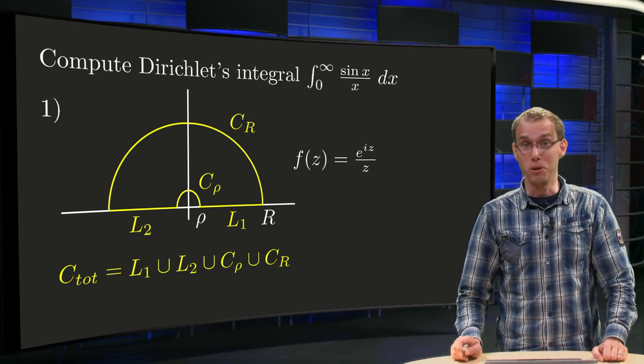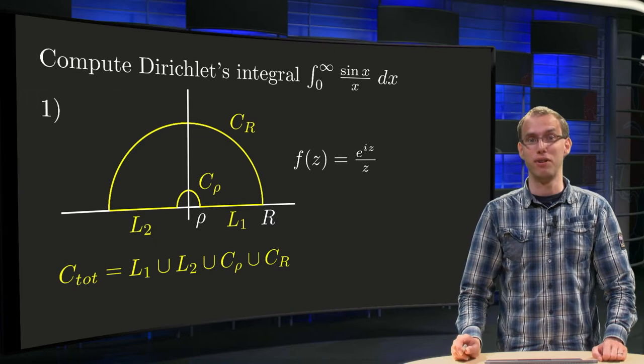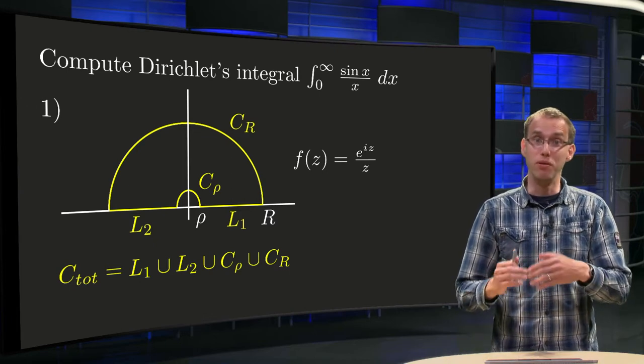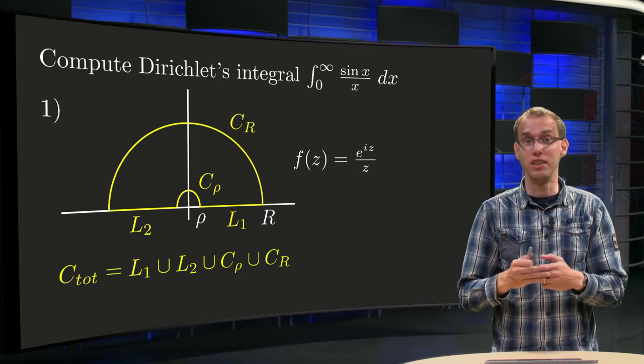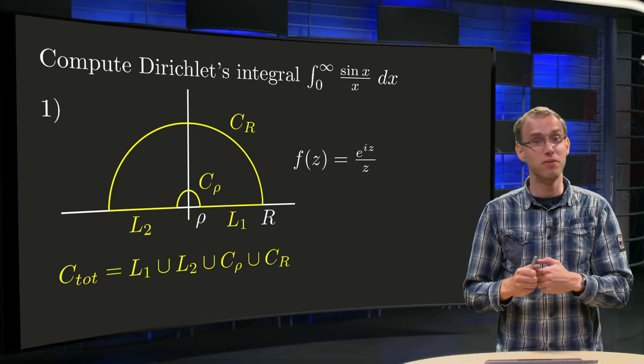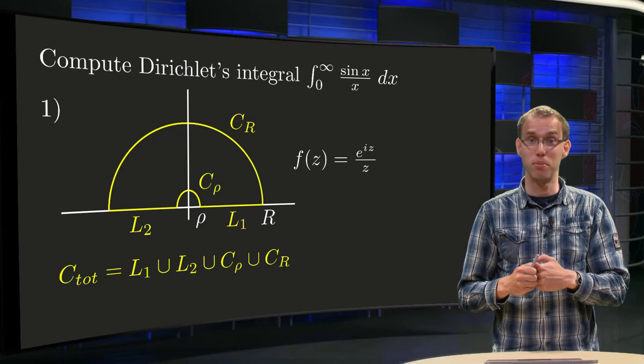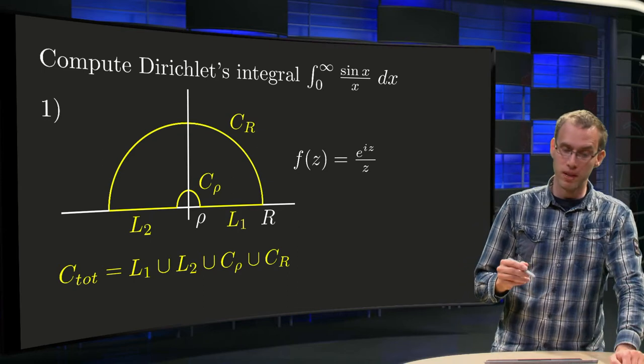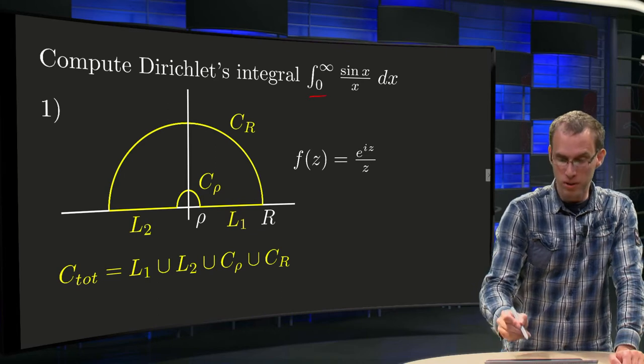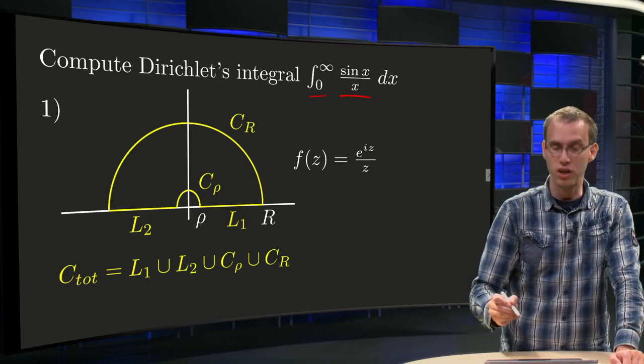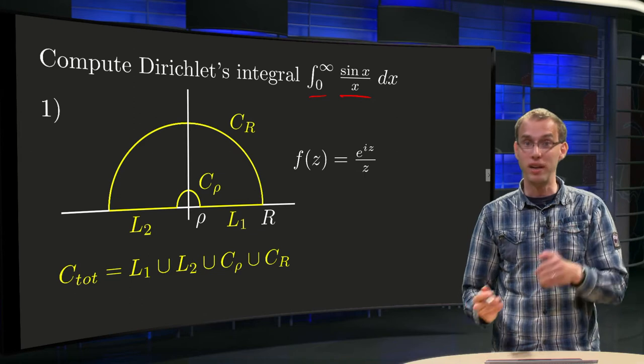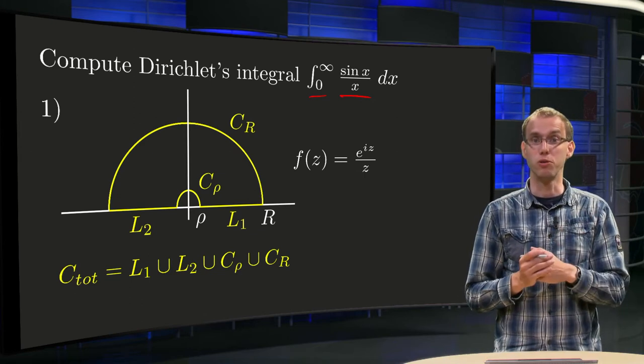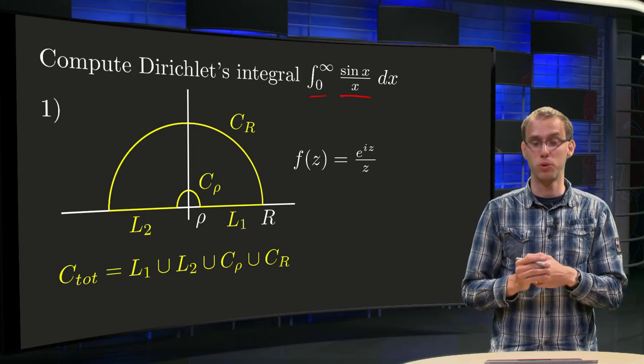We have seen that we can use contour integration even if our function has a singularity on the real axis. In that case we will need to make a small indentation in the contour. In this video you will see an explicit example of such an integral. This particular integral is called Dirichlet's integral, and it is the integral from 0 to infinity of sin x over x dx. You see already that you have a small problem at the origin. So if we want to use contour integration, what contour do we need to choose?